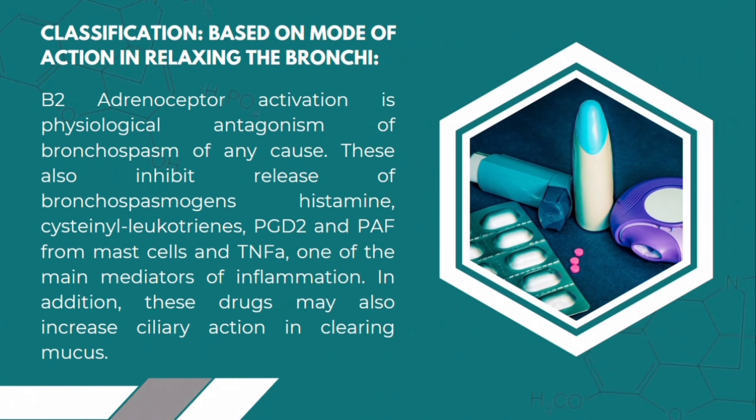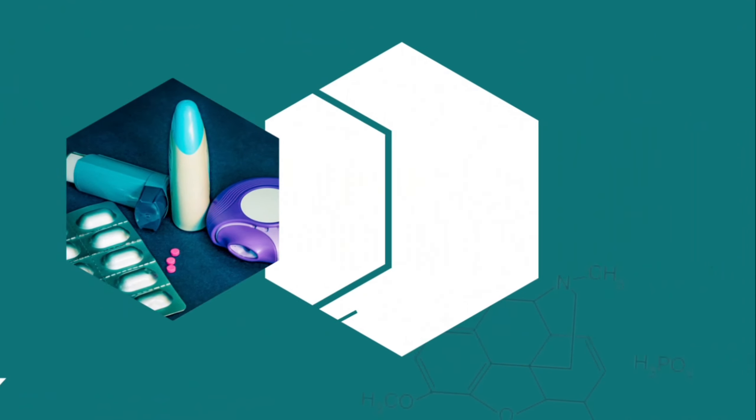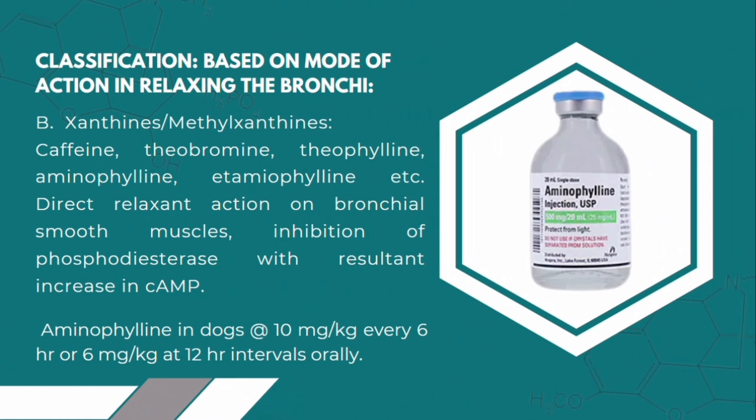Class B: Beta-2 agonists are the most effective bronchodilators. They can abolish airway constriction regardless of the spasmogens. Example: ephedrine. Class B also includes xanthines — theophylline and aminophylline. Aside from the bronchodilator effect, these also inhibit muscle degradation. Theophylline elevates the strength of the respiratory muscles, so that only minimal work is needed for breathing.